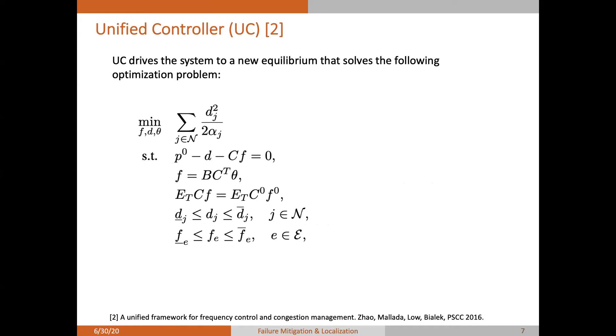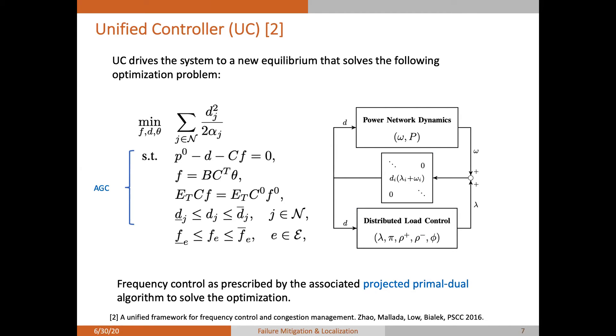Indeed, a recent frequency control algorithm, proposed also in PSCC, called the unified controller, can drive the system to the following equilibrium. The first four constraints for the unified controller is exactly the balancing rule when the automatic generation control is adopted. Moreover, UC can also enforce the line limit. So compared with AGC, UC responds more actively to the failures, so that all line flows are below the rating after failure. So UC can fully stop the failure. I will not talk about the detailed design for UC, but the main idea is that it derived from a projective primal dual axiom to solve the left optimization problem. And this can be implemented in a distributed manner.